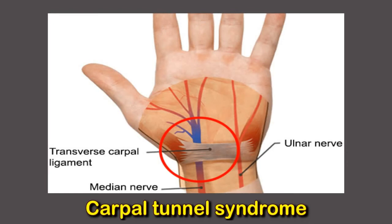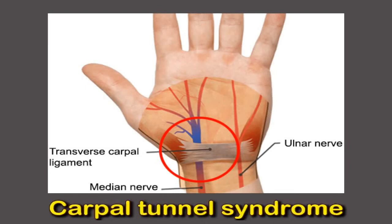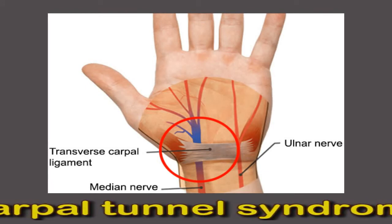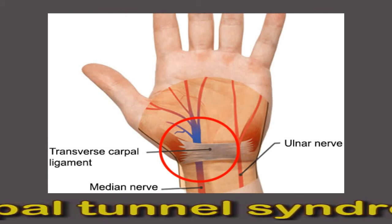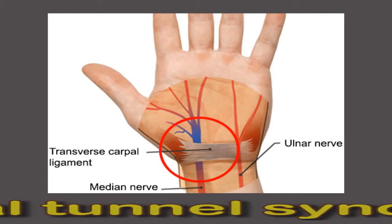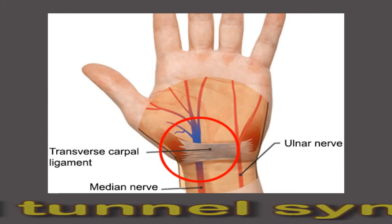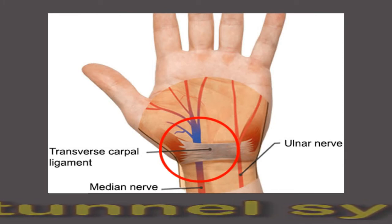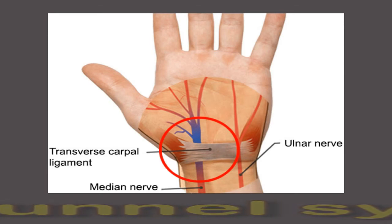Carpal tunnel syndrome is a condition that develops when a ligament thickens and puts pressure on a nerve. The nerve is squeezed, which can cause pain, numbness, and weakness in the hand. People who are obese or those who have diabetes or arthritis are at an increased risk. The condition is also linked with repetitive work involving lifting, typing, or using equipment that vibrates the hand.